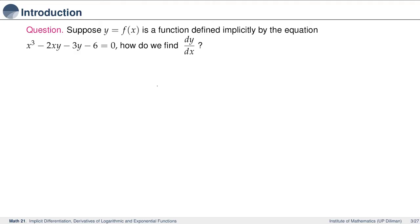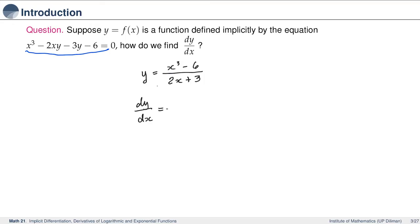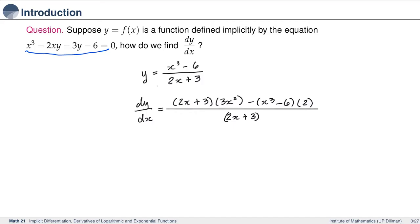For example, if you have y equal to f of x, a function defined implicitly by the equation x cubed minus 2xy minus 3y minus 6 equal to 0, how do we evaluate dy over dx? We can actually solve for y from this equation and get x cubed minus 6 all over 2x plus 3, which is written as a quotient. Hence, to get the derivative of y with respect to x, we apply the quotient rule — low d high minus high d low over low squared. So 2x plus 3 times the derivative of the numerator, 3x squared, minus x cubed minus 6 times the derivative of the denominator, which is 2, all over quantity 2x plus 3 squared.